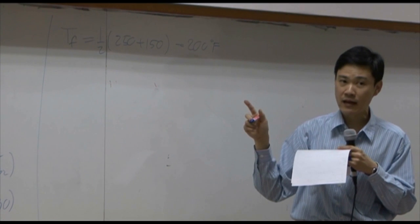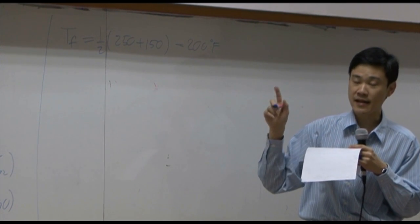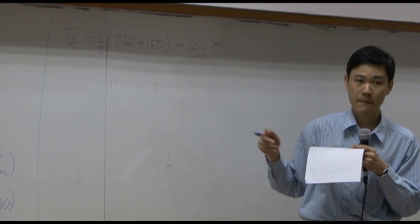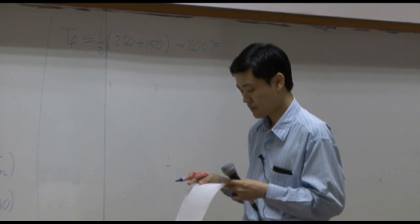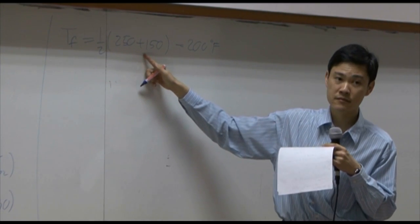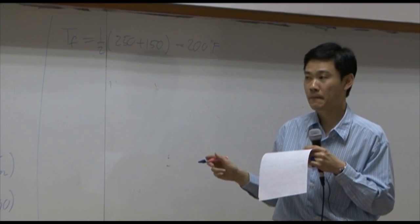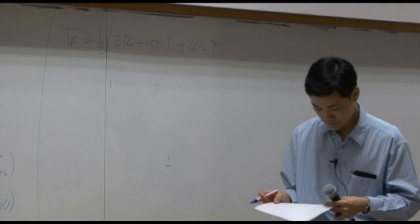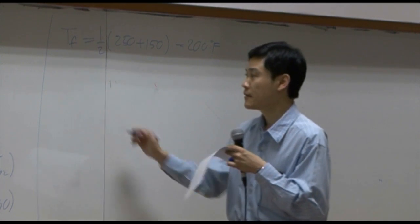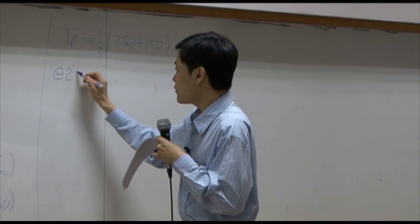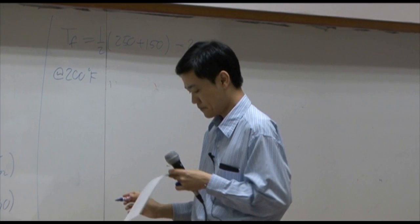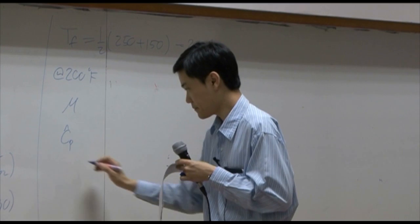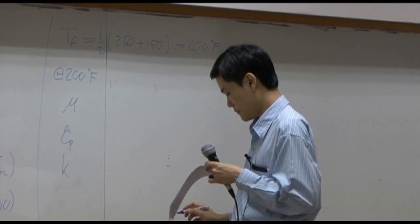This number will be taken as the average temperature for the whole system. So that you can look it up for physical properties like density, viscosity at this particular temperature. And then you can find Reynold number. At 200 degree Fahrenheit, you can look for viscosity, heat capacity, thermal conductivity.